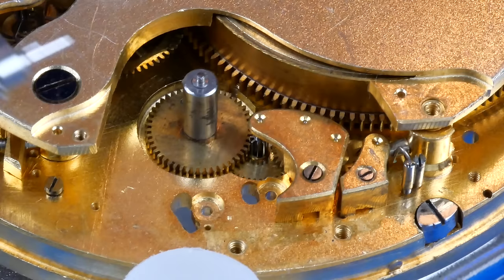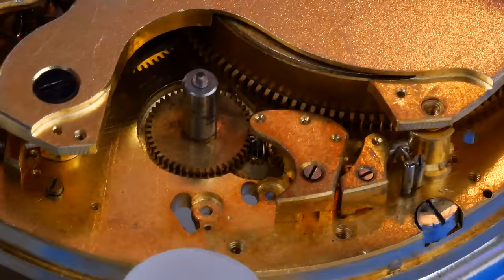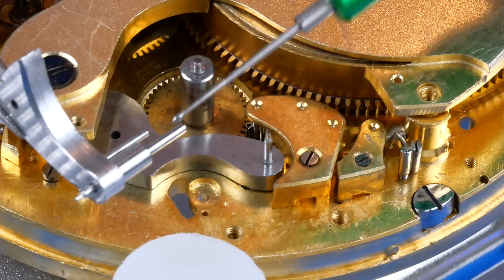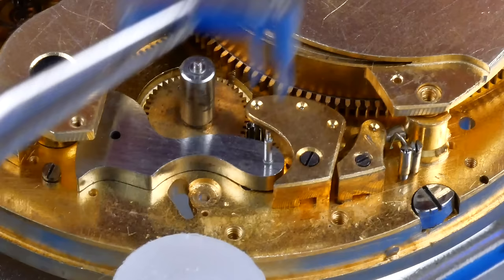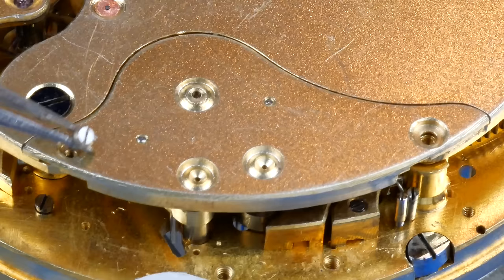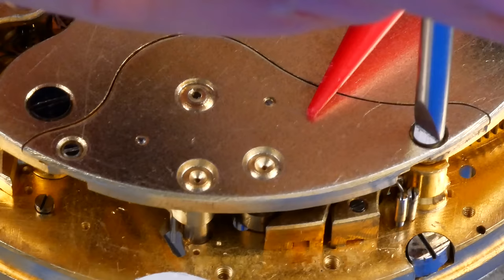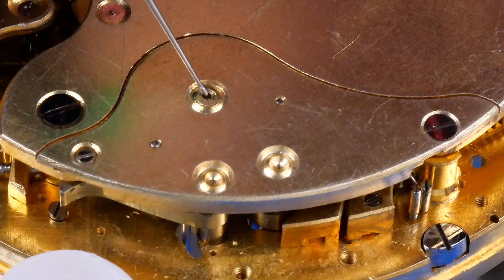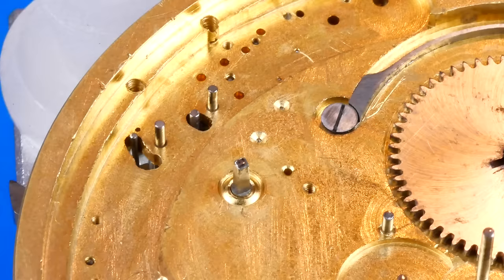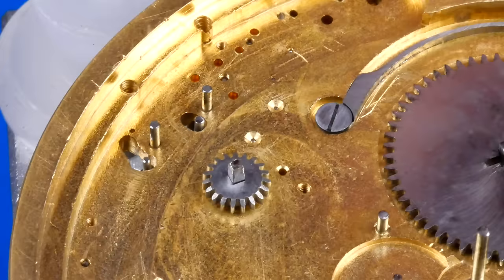Finally, the repeater drive wheel is installed, which also serves as the repeater mainspring arbor. The hour repeater hammer is lowered into place, followed by the quarter repeater hammer. The bridge plate is now installed. I use HP 1300 on all the pivots. On the dial side of the movement, the drive gear is placed over the squared end of the repeater drive wheel arbor and secured with a brass collet.